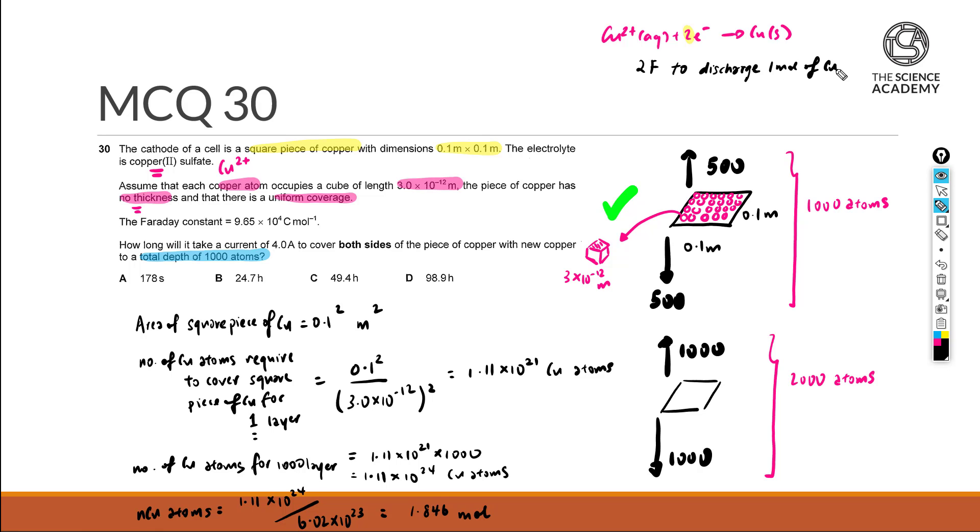Now each Faraday itself is given at the value of 9.65×10^4 coulombs per mole. So that means 2×96500 coulombs to discharge 1 mole of copper. But since we are not dealing with 1 mole of copper, we have 1.846 mole of copper. That will mean that it will be 2×96500 divided by 1 times 1.846 C to discharge this particular amount of copper.